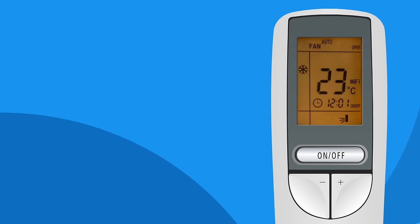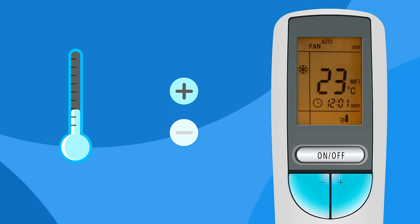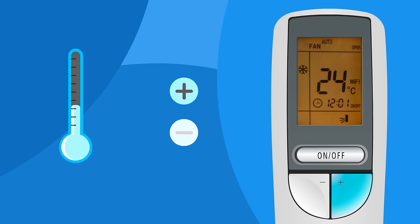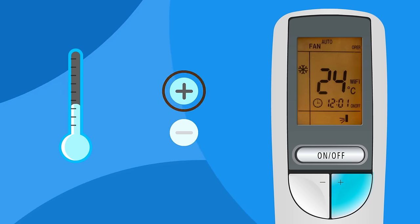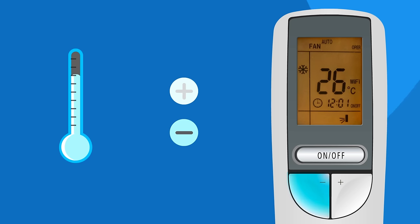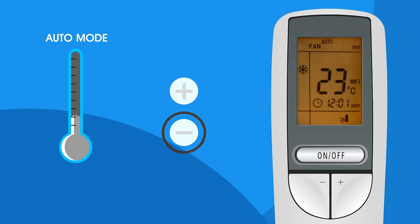Now let's look at some other buttons and their functionalities. Plus and minus buttons: the plus and minus buttons are used to increase or decrease the current temperature as desired. Press the plus button once to increase the temperature by one degree; holding the button for two seconds rapidly increases the temperature. Press the minus button to decrease the temperature.